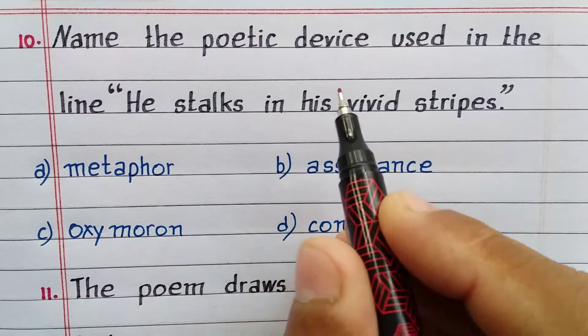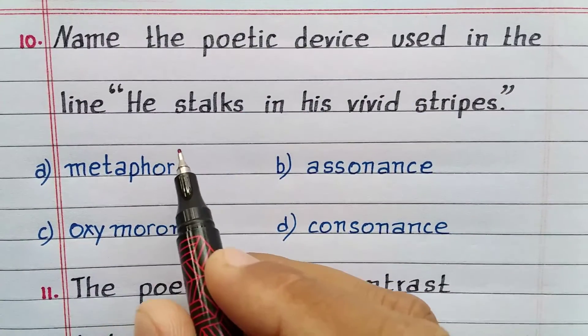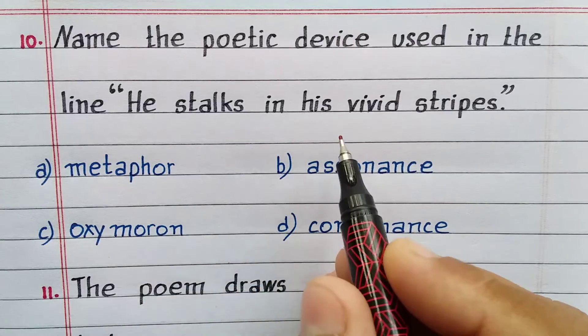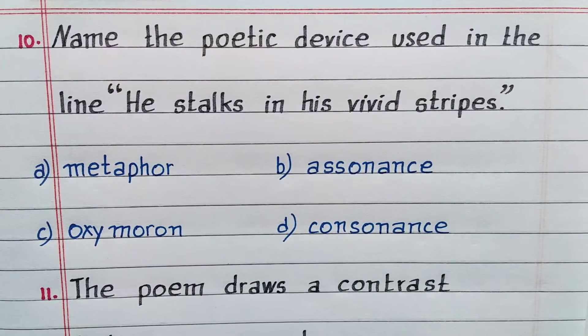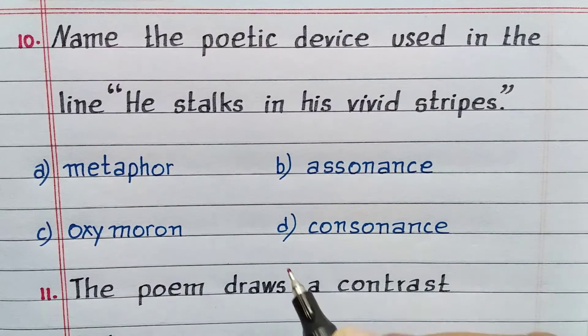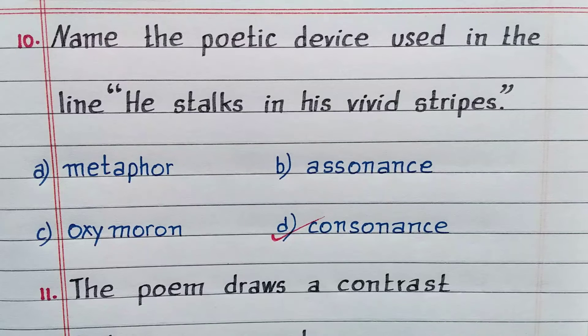Name the poetic device used in the line 'he stalks in his vivid stripes.' Option D. Consonance.